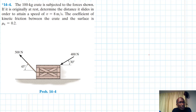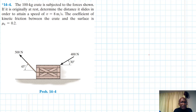Welcome. The problem reads: a 100 kg crate is subjected to the forces shown. If originally at rest, determine the distance it slides in order to attain a speed of 8 meters per second. The coefficient of kinetic friction between the crate and the surface is μk equal to 0.2. This problem comes from Engineering Mechanics and Dynamics, 14th edition by R.C. Hibbeler.